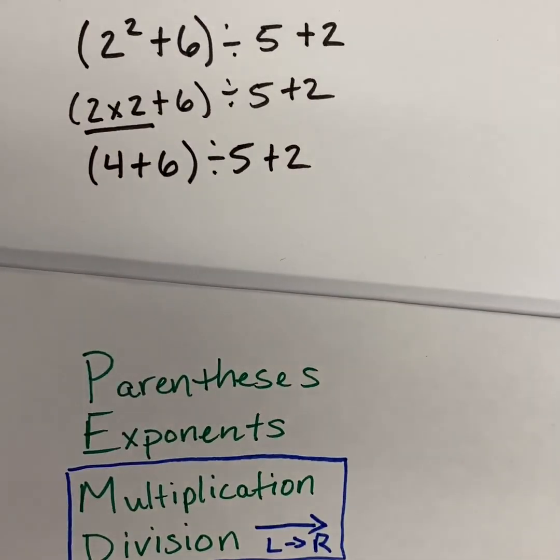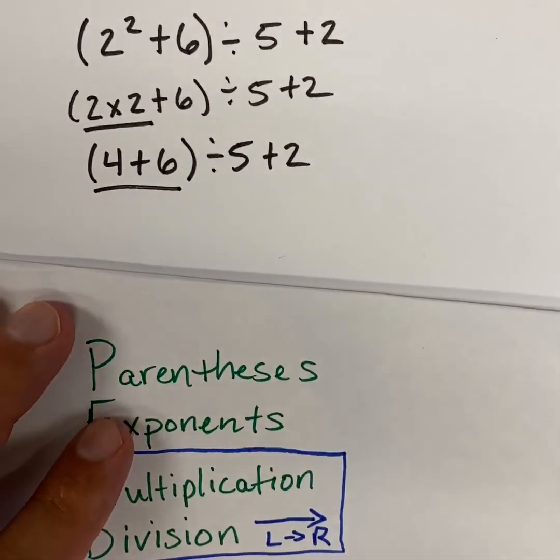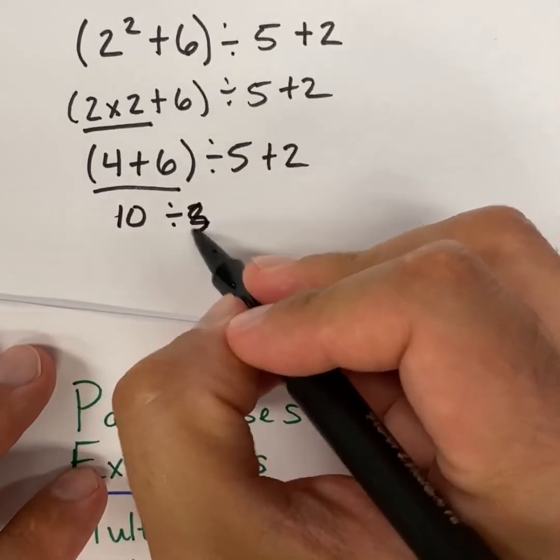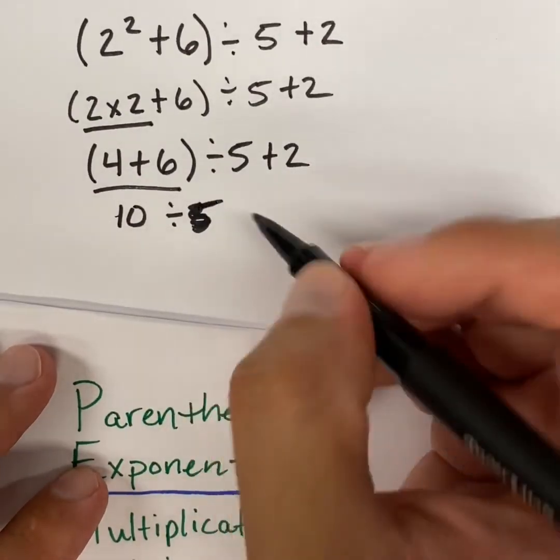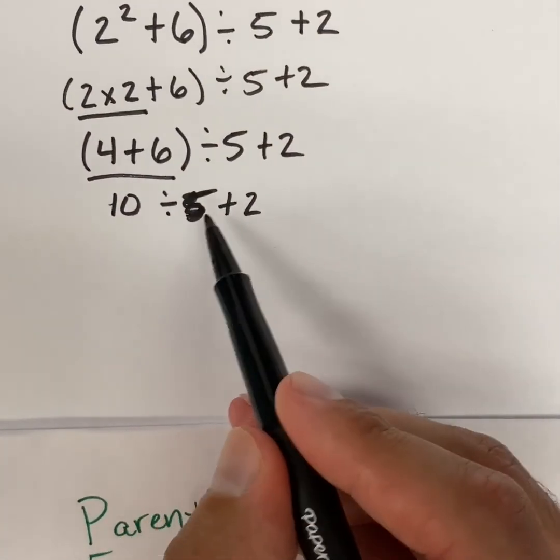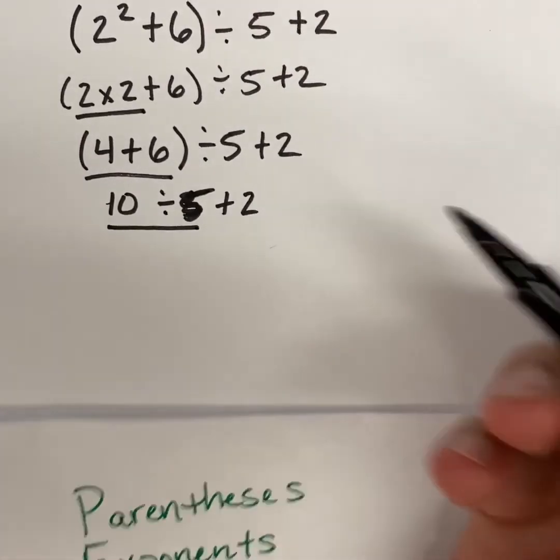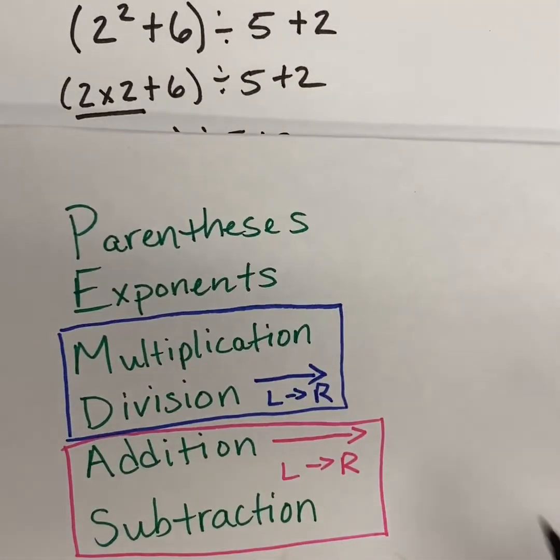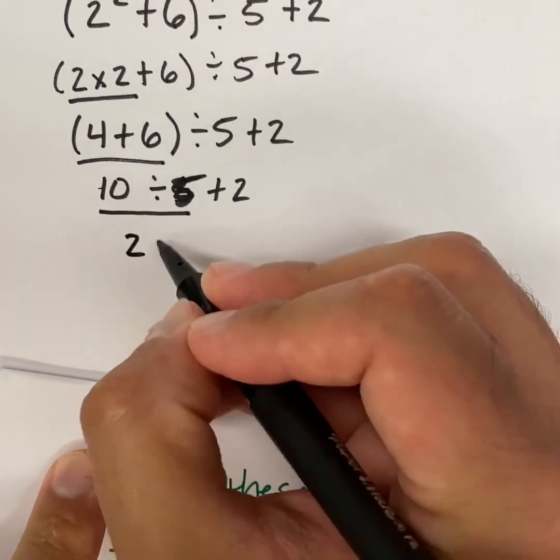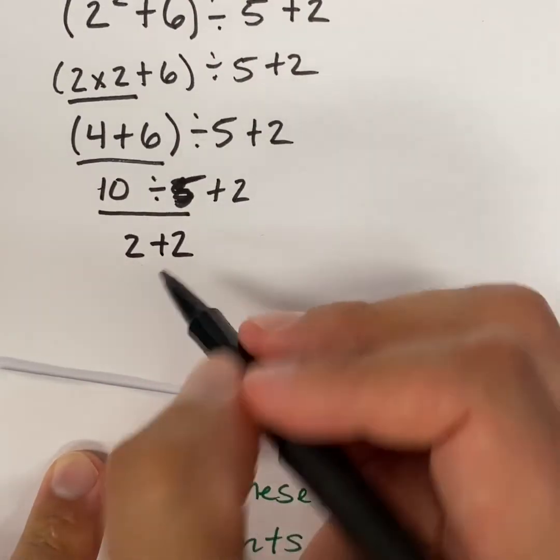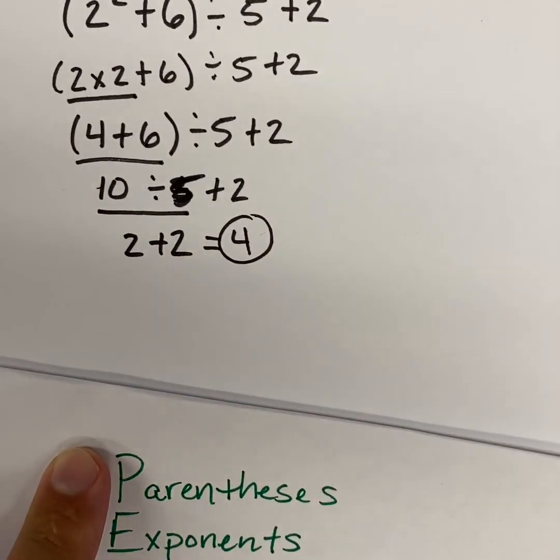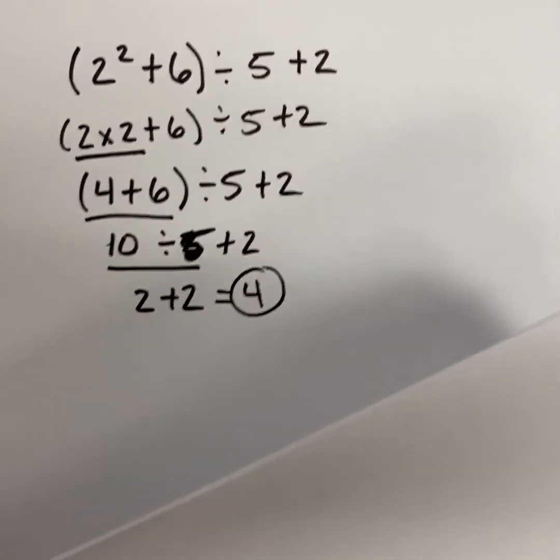Do we still have parentheses? We do. We're going to do this right here, the 4 plus 6. So we would get 10 divided by 5. 10 divided by 5 is going to be our next step because we're going to do division or multiplication next in our order of operations. We're not going to do addition or subtraction yet. We would get 2 plus 2. 2 plus 2 is equal to 4. And that would be our correct answer following the order of operations.